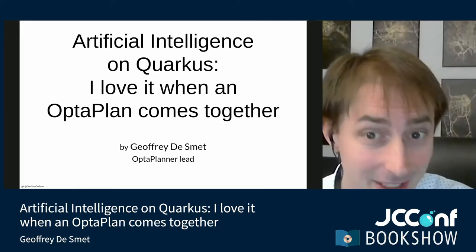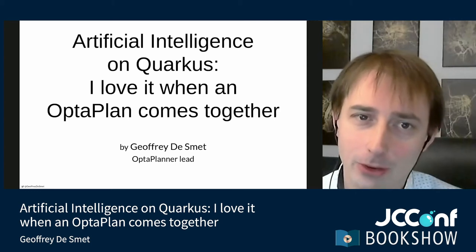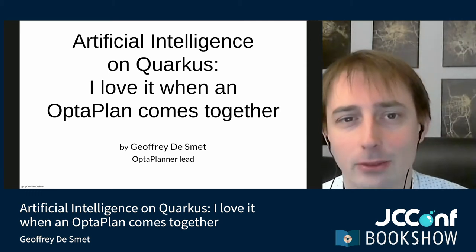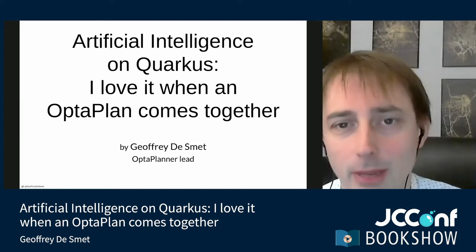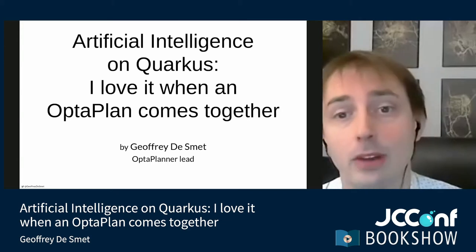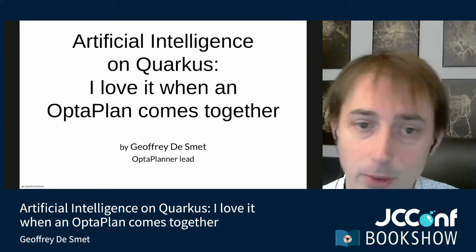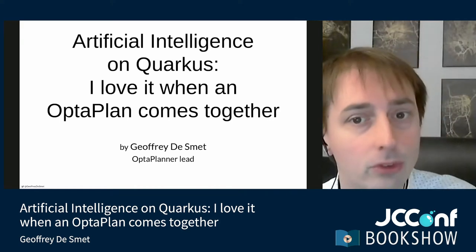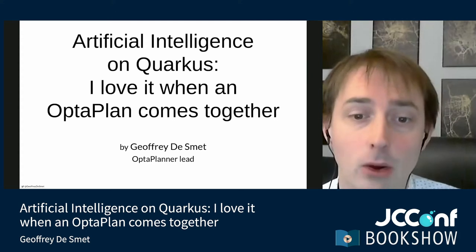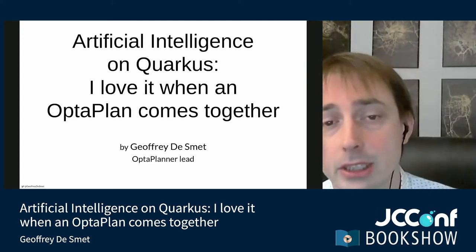I'm going to talk about artificial intelligence on Quarkus with OptaPlanner. I'm not going to talk about the typical AI that everybody talks about — namely machine learning, pattern recognition, figuring out if an image shows a dog, or transcribing voice. What I'm going to talk about is planning optimization. I think it's one of the most underestimated areas of artificial intelligence.